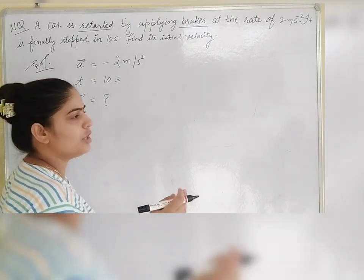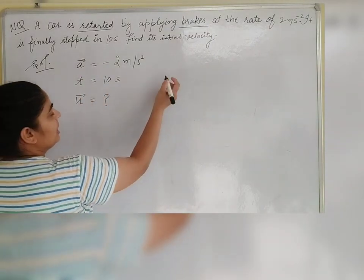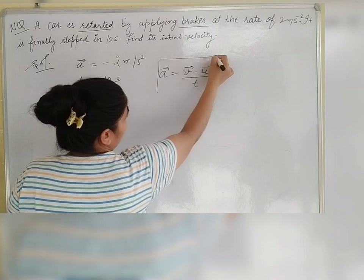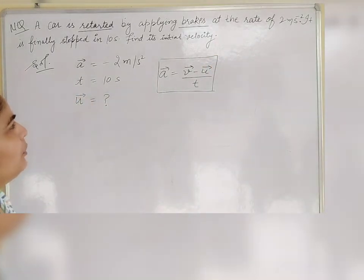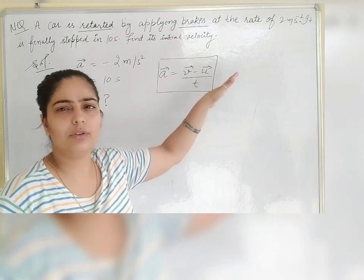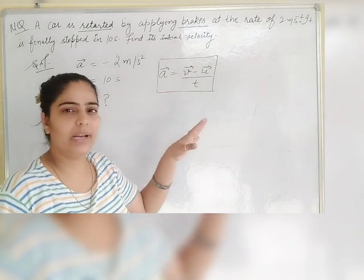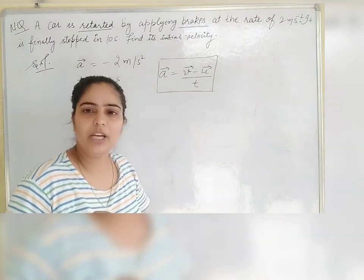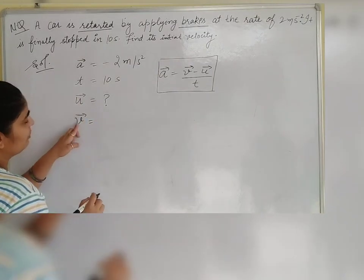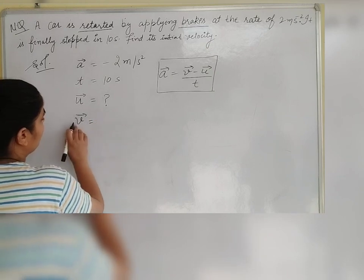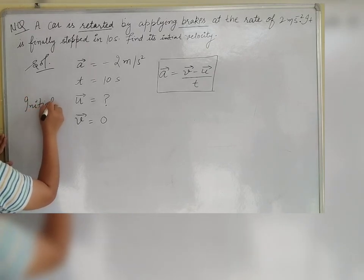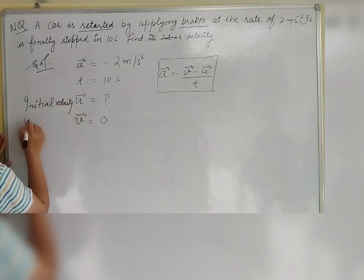Now you have the formula for acceleration. Rate of change of velocity - what does it mean? Acceleration. We will put this formula. But first of all, when the car came in and the brake was applied, the final velocity became 0. When the brake was applied, it stopped. Finally the car stopped, which means the final velocity is 0. The final velocity V is 0, initial velocity is U.